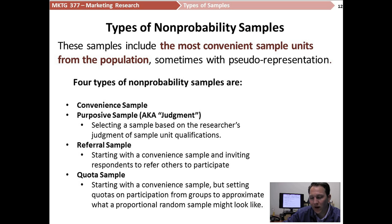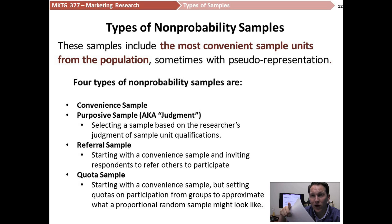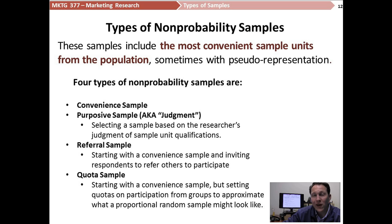The final non-probability sample is a quota sample. You take a convenient sample but set some guidelines — for example, after 500 interviews, you want a 50-50 split of men and women. They're not being selected through a random process, but you cut off at 250 women and make sure you also get 250 men. A quota sample approximates the representation you might have in a probability sample, but it's using a convenient sample with the researcher placing some rules or guidelines on what kind of data gets collected.